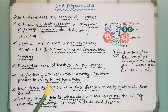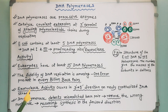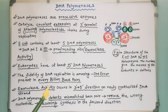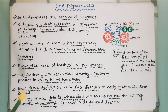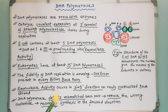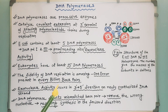Living organisms have solved the potential problem of insufficient fidelity during DNA replication by evolving a mechanism for proofreading the nascent DNA chains as they are being synthesized. The proofreading process involves scanning the termini of nascent DNA chains for errors and correcting them.